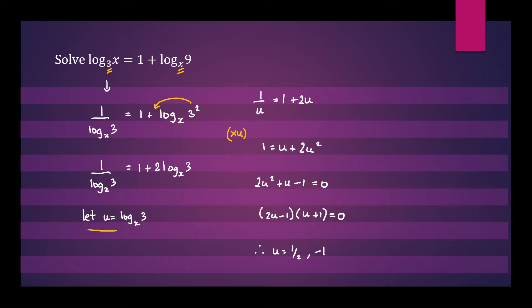Now we go back to our original substitution and we can calculate x. So we can write log 3 base x equals negative 1, and log 3 base x equals a half.